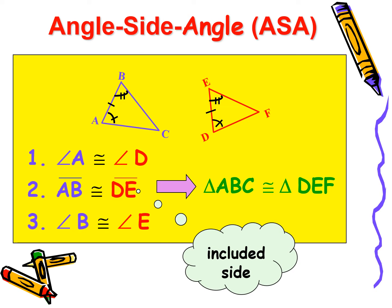Now let's move on to Angle-Side-Angle, or ASA. First, we have angle A is congruent to angle D. Then, side AB is congruent to DE. And angle B is congruent to angle E. So we have angle, included side, and angle. Therefore, triangle ABC is congruent to triangle DEF because of ASA congruence.